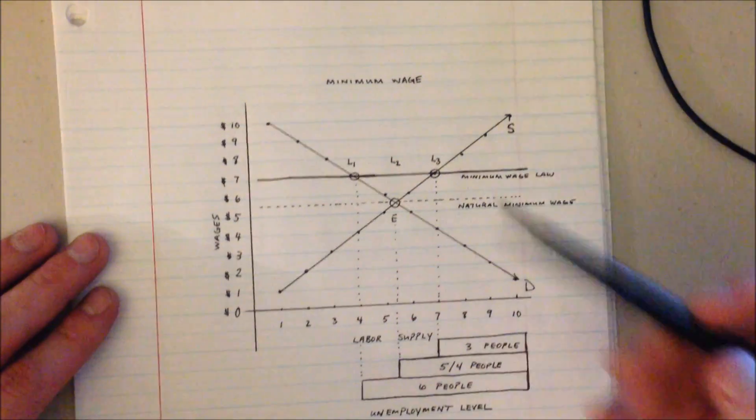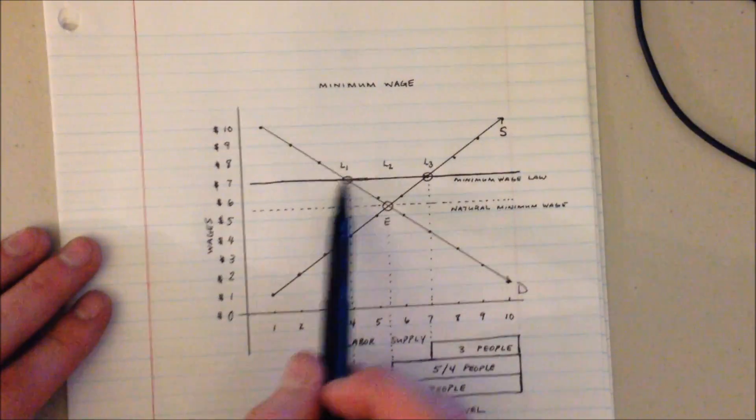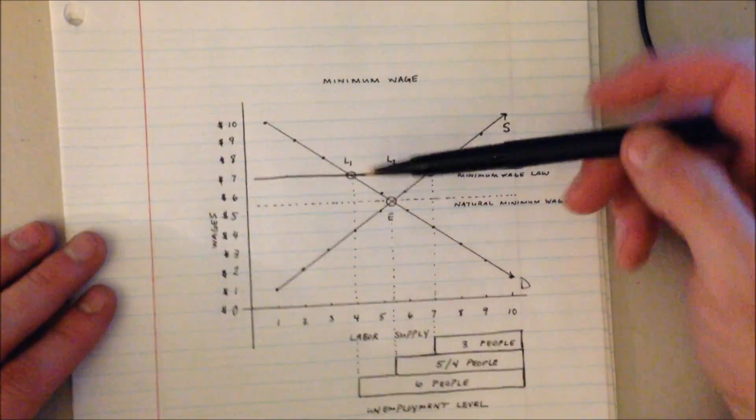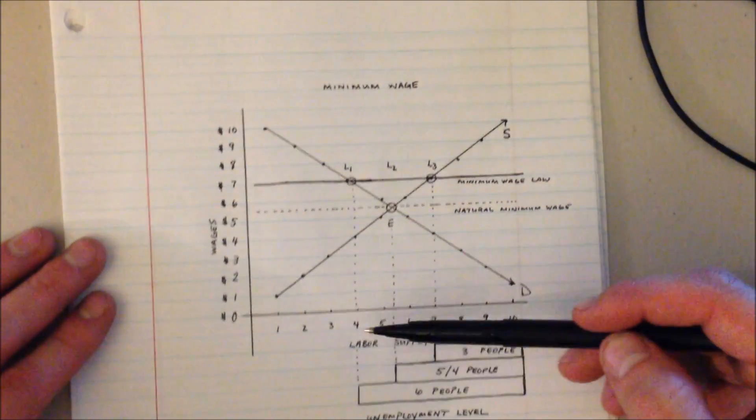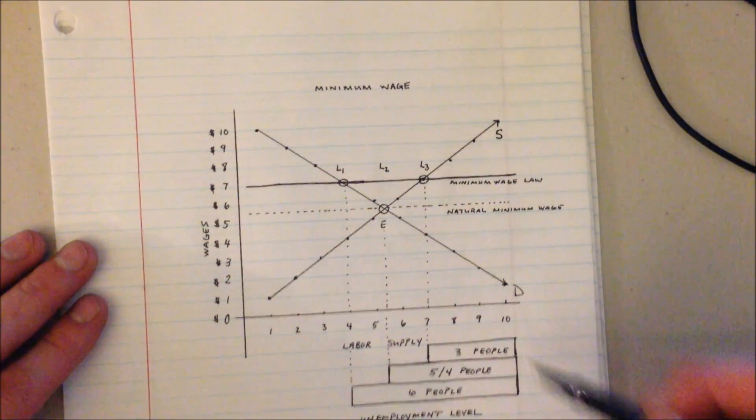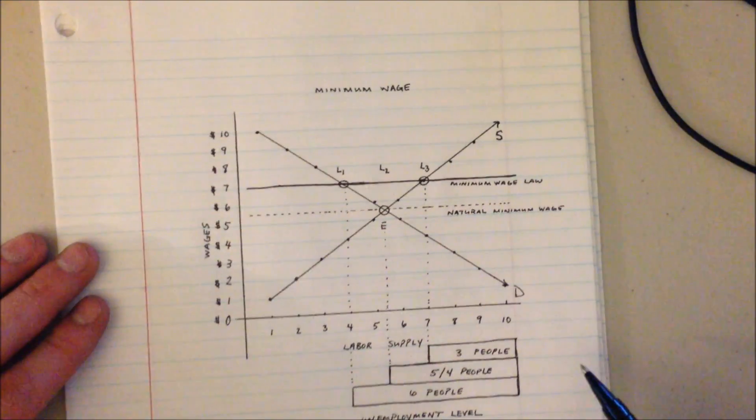At L1 on our demand side, our demand intersection where we say at a minimum wage of $7 we are only willing to employ 4 people, we would have 6 people unemployed. So each one of these different scenarios is a possibility.